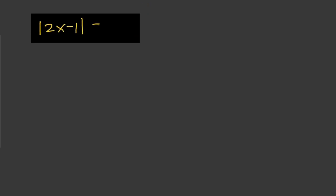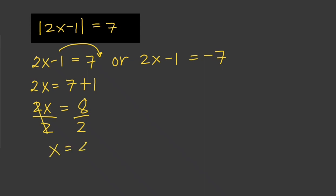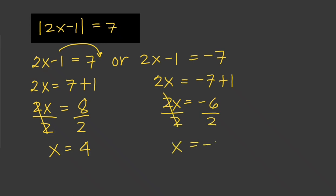Given absolute value of 2x minus 1 equals 7, we can write this as 2x minus 1 equals 7 or 2x minus 1 equals negative 7. Solving for x: for the first case, 2x equals 7 plus 1, so 2x equals 8, and x equals 4. For the other case, 2x equals negative 7 plus 1, so 2x equals negative 6, and x equals negative 3. The solutions are x equals 4 and x equals negative 3.